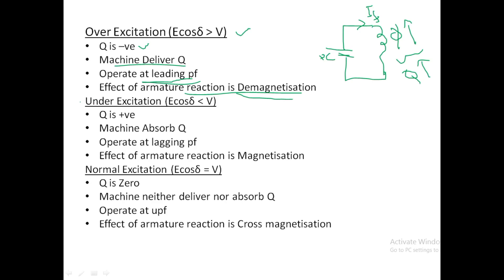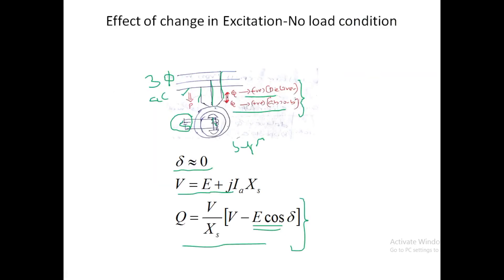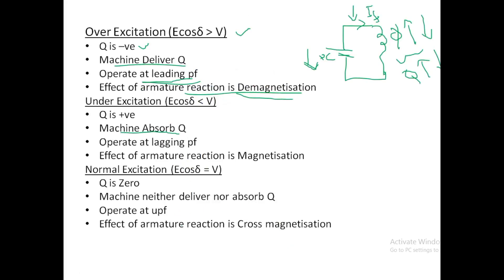Under-excitation means the DC excitation given is less. If excitation is less, IF will be less; if IF is less, flux will be less; if flux is less, Q will be less. So it will be absorbing reactive power. E cos delta is less than V means Q will be positive. Q is positive and it is operating at a lagging power factor.